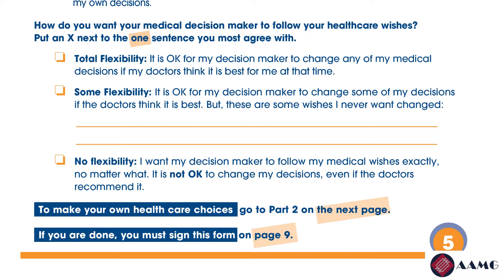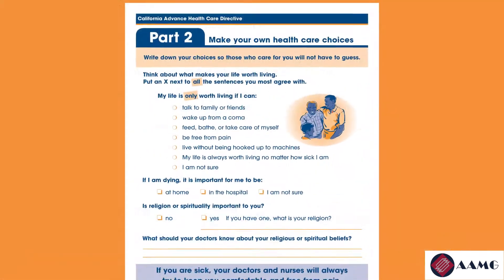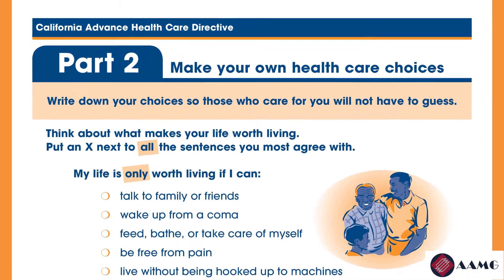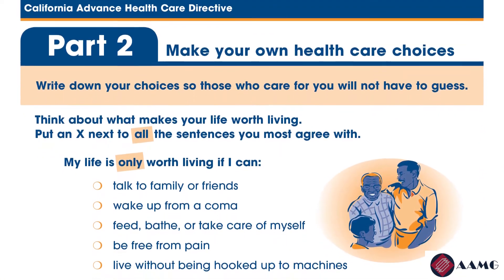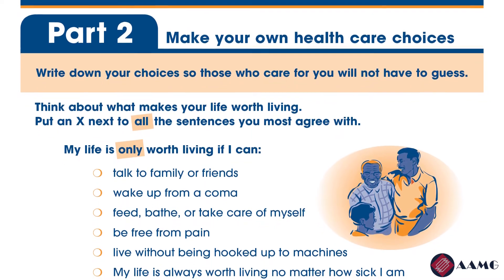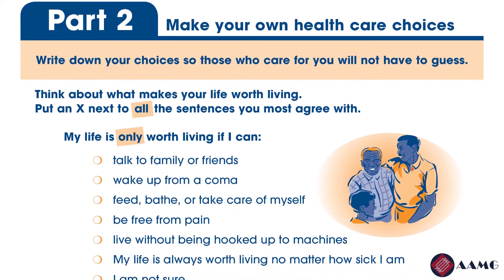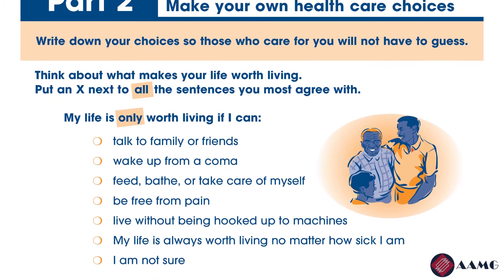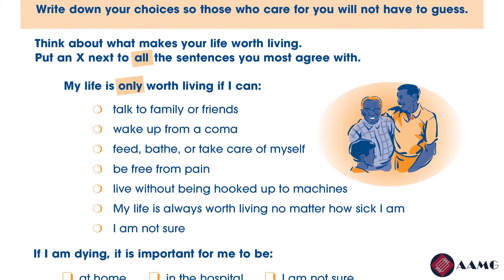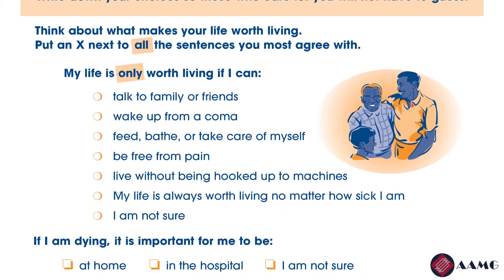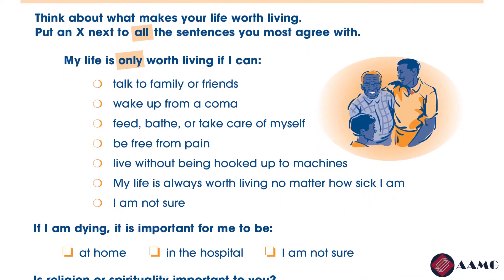Part one of the form — choosing a medical decision maker — ends here. If you wish to make your own healthcare choices, go to part two on the next page. If you do not wish to make your own healthcare choices, please remember to sign the form in part three on page nine. Page six begins part two of the advanced healthcare directive: 'Make Your Own Healthcare Choices.' This is important because you should write down your choices so those who care for you will know what you want and will not need to guess.